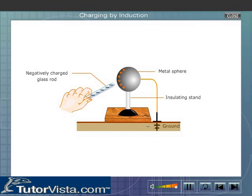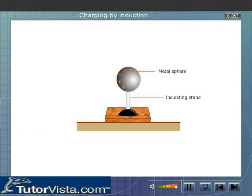Now disconnect the sphere from the ground. The positive charge continues to remain on the sphere. Let us see what happens when the rod is removed. The charges spread uniformly over the sphere. Thus we get a positively charged metal sphere.